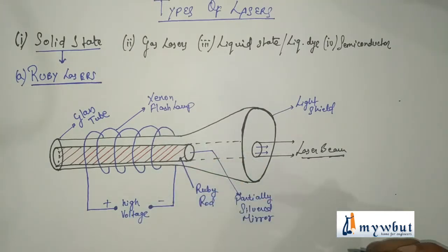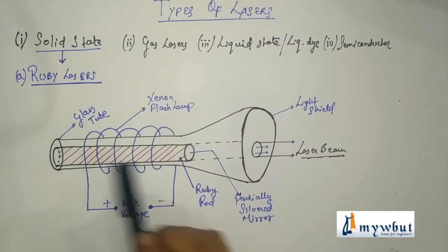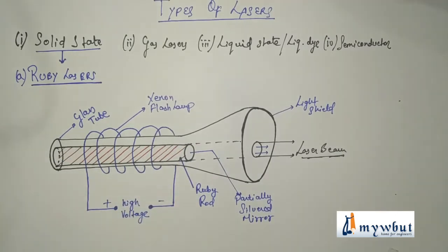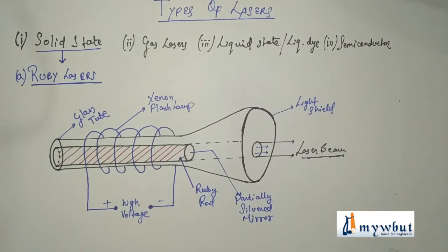This is the rough schematic arrangement of a ruby laser that is classified under a solid laser. So a ruby laser is a solid state laser. It consists of a pink ruby crystal that is cylindrical in nature or cylindrical rod of pink ruby crystal whose ends are optically flat and parallel. One end of the ruby rod is fully silvered. See, I have mentioned here partially silvered and this one is fully silvered. And the other end is partially, that is 50% silvered.